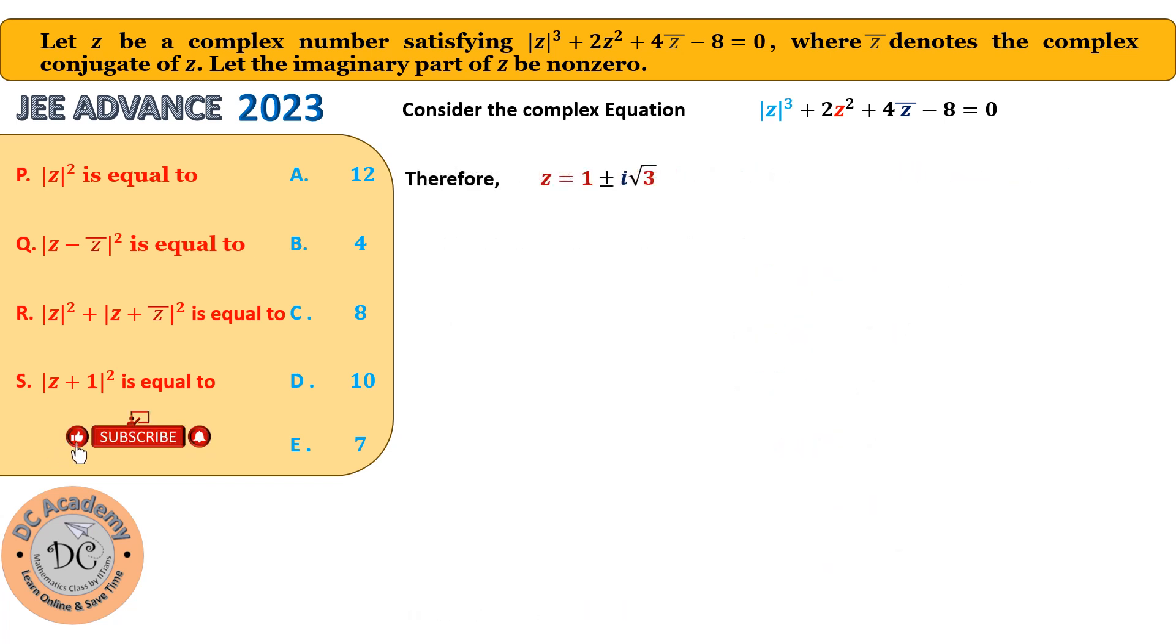So after obtaining the z, we can easily obtain all of the things, important quantities we need to find. |z²|, |z - z̄|², and so on and so forth. So here, we consider WLOG that z = 1 + i√3 and z̄ = 1 - i√3. We can take that in a reverse form as well. There is no problem. Now here, |z|². |z|² will be 1 + (√3)², which gives me |z|² = 4. So therefore, for P and B are connected or they are equivalent.